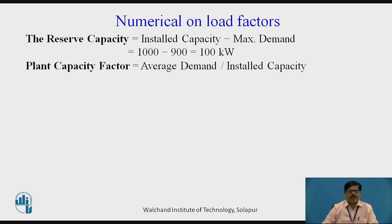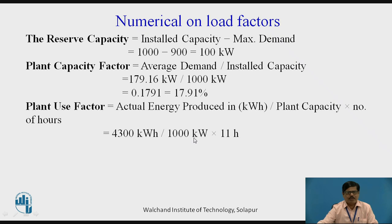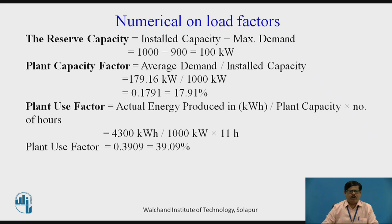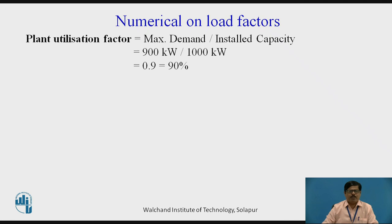Plant capacity factor is given by average demand divided by installed capacity. Average demand is 179.16 KW divided by installed capacity of 1000 KW, so the plant capacity factor is 0.1791, that is 17.91%. Plant use factor equals actual energy produced in KWh divided by plant capacity multiplied by number of operating hours. The actual energy produced is 4300 KWh, divided by installed capacity of 1000 KW, and the plant operates for only 11 hours — for the remaining 13 hours there was no load. So the plant use factor is 0.3909, or 39.09%. Plant utilization factor is given by maximum demand divided by installed capacity: 900 KW divided by 1000 KW gives 0.9, or 90%.